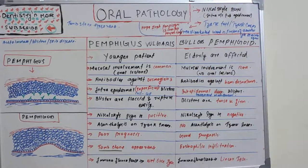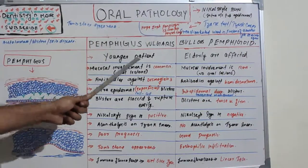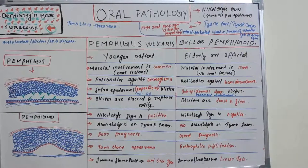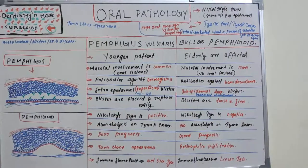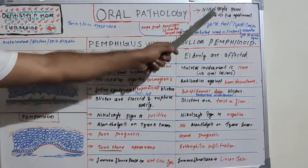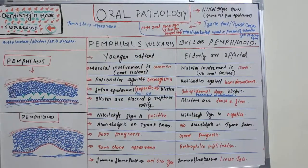Hello everyone, welcome back to a new session on dentistry and more. Today's topic in oral pathology is pemphigus vulgaris and bullous pemphigoid. The names are a little bit similar but there are lots of differences between these two diseases. Along with that, we'll be learning what is Nikolski sign and what is the Tzanck test or Tzanck cell.